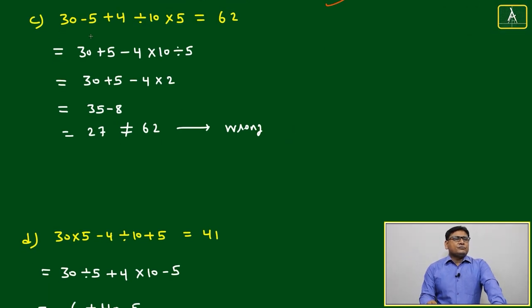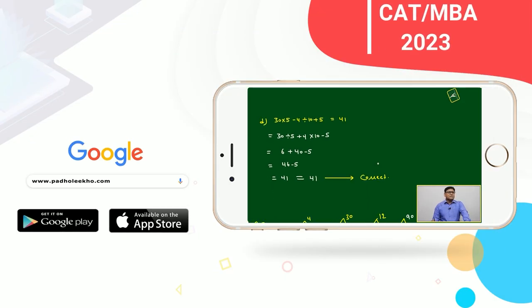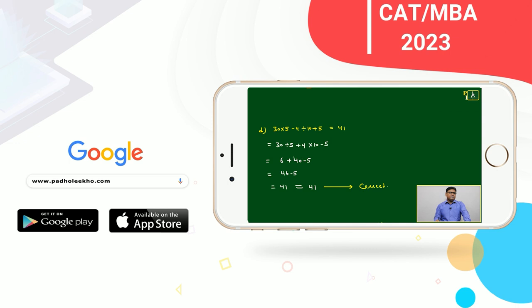Option C: 30 - 5 + 4 ÷ 10 × 5 = 62. After changes, it is coming 27, but given as 62, so this is also wrong. This means by default D must be correct, but we will verify. Yes, 41 equals 41. This is 100 percent correct.